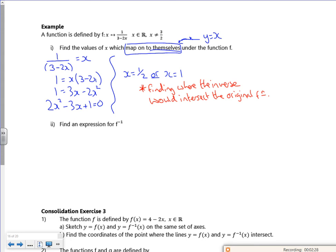Right, so now it says find an expression for the inverse. So first bit, y equals 1 over 3 minus 2x. Second bit, swap x and y. Third bit, start rearranging, so I'm going to switch them.